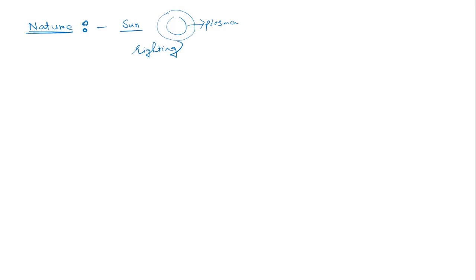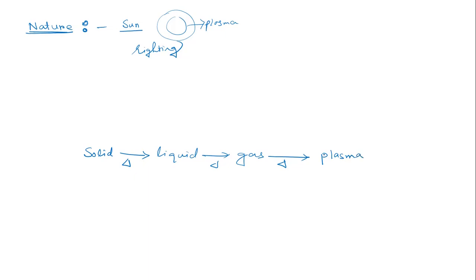What is plasma? If you take a solid and heat it up, it becomes liquid, or sometimes directly a gas. If we then heat up or energize this gas further, it becomes plasma. Plasma is another state of matter, sometimes called the fourth state of matter — it happens when we heat up or energize the gas to a higher state.